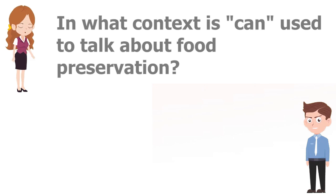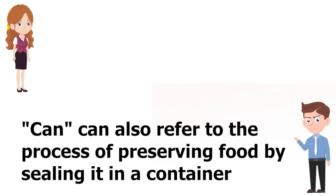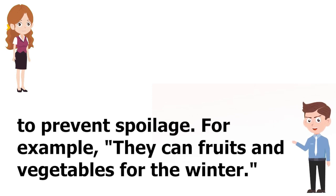In what context is "can" used to talk about food preservation? "Can" can also refer to the process of preserving food by sealing it in a container to prevent spoilage. For example, "They can fruits and vegetables for the winter."